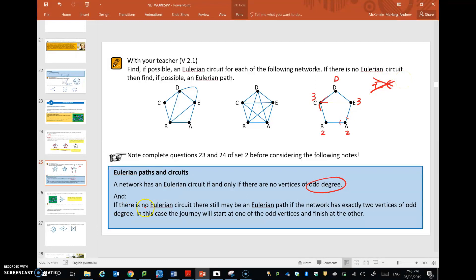However, an Eulerian path is possible if the network has exactly two vertices of odd degree, which this one does. C and E are both odd, and we did find an Eulerian path through this network before.